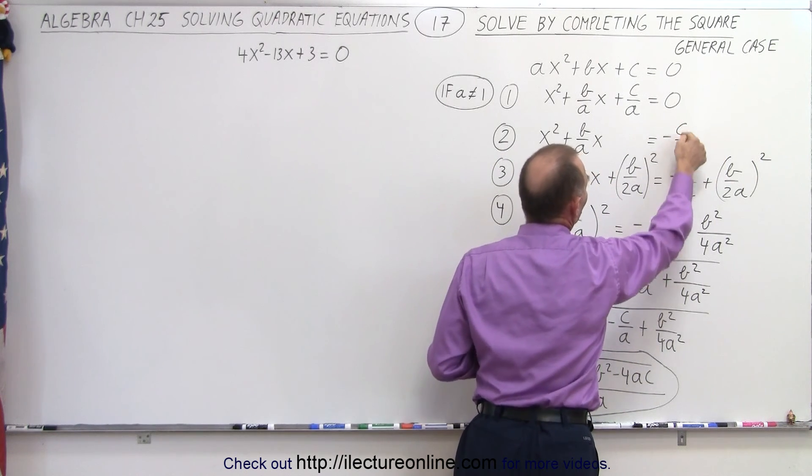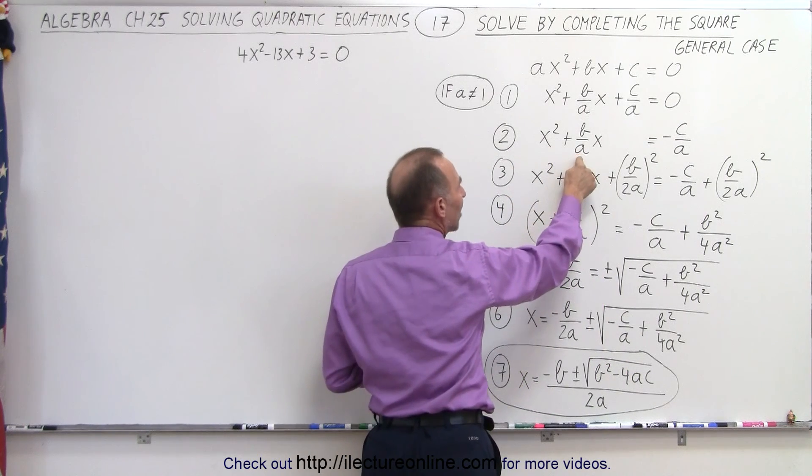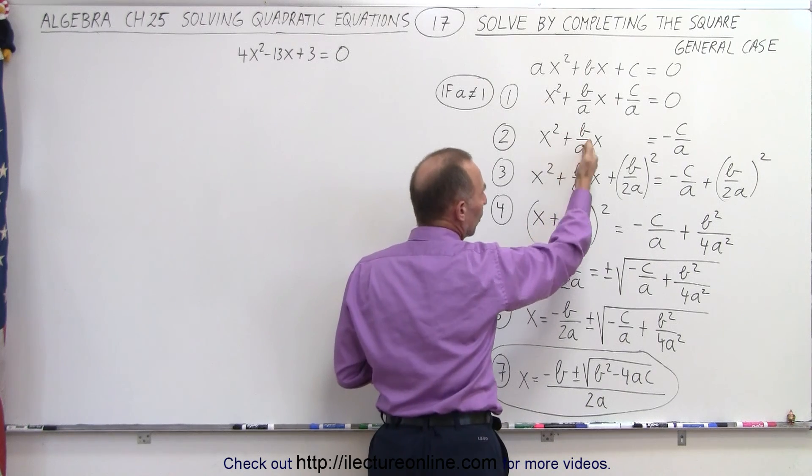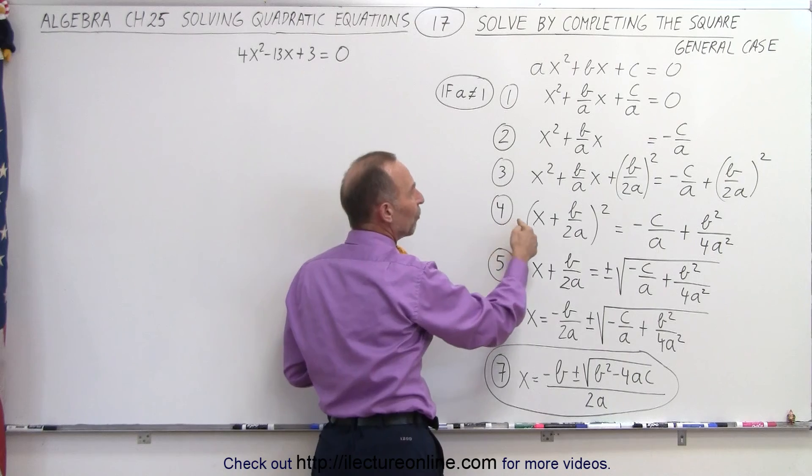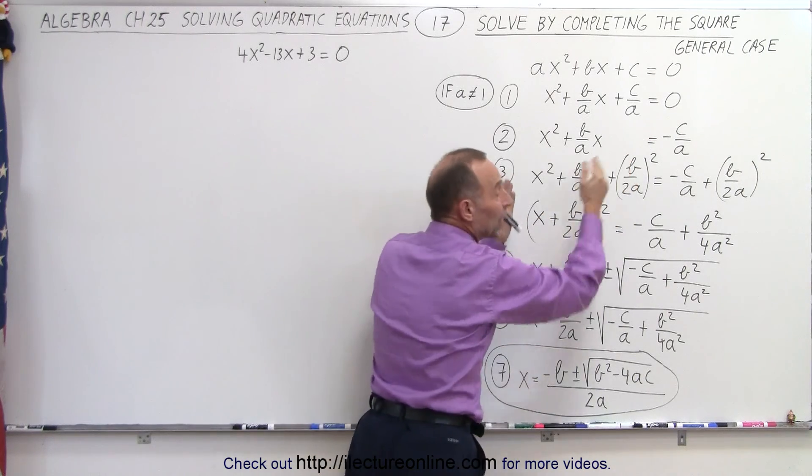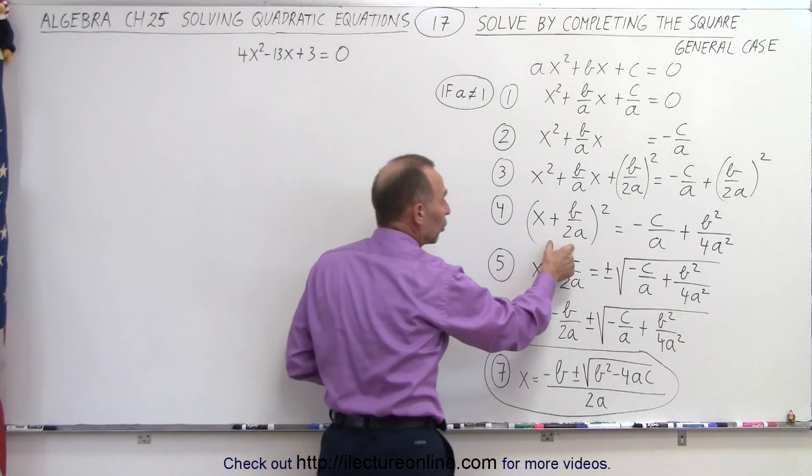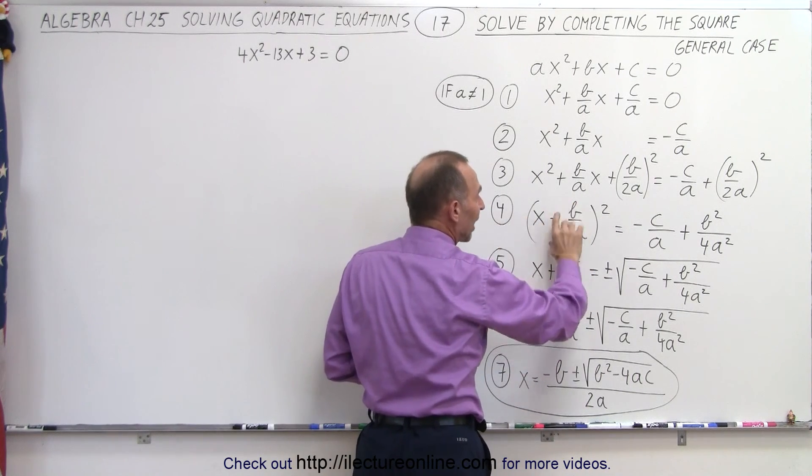The third step is we're going to take half the coefficient of the middle term, which is b/2a, and square that and add it to both sides. The next step is to factor the left side, because now we end up with a perfect square on the left side, so we can easily factor that as a single binomial squared.